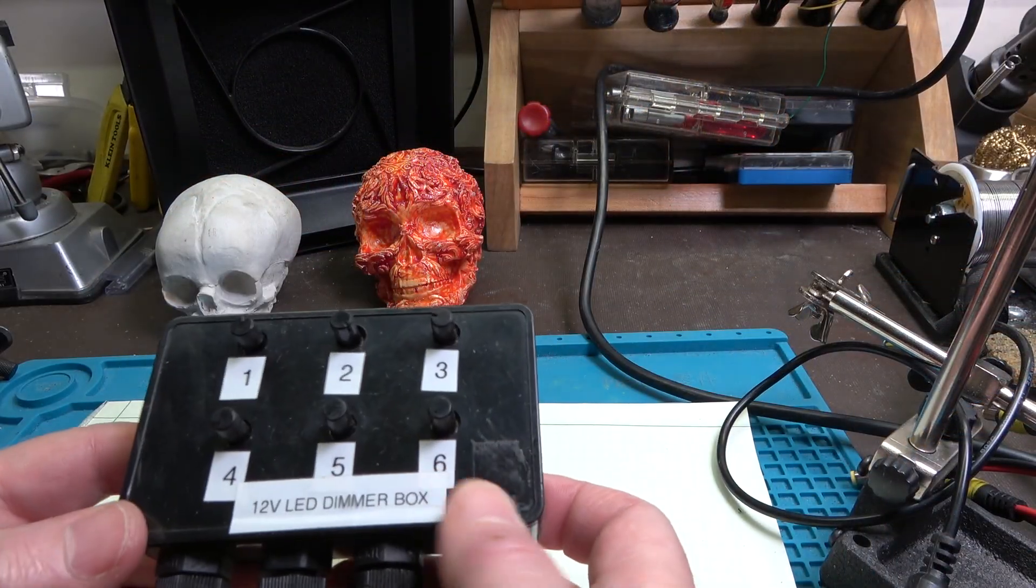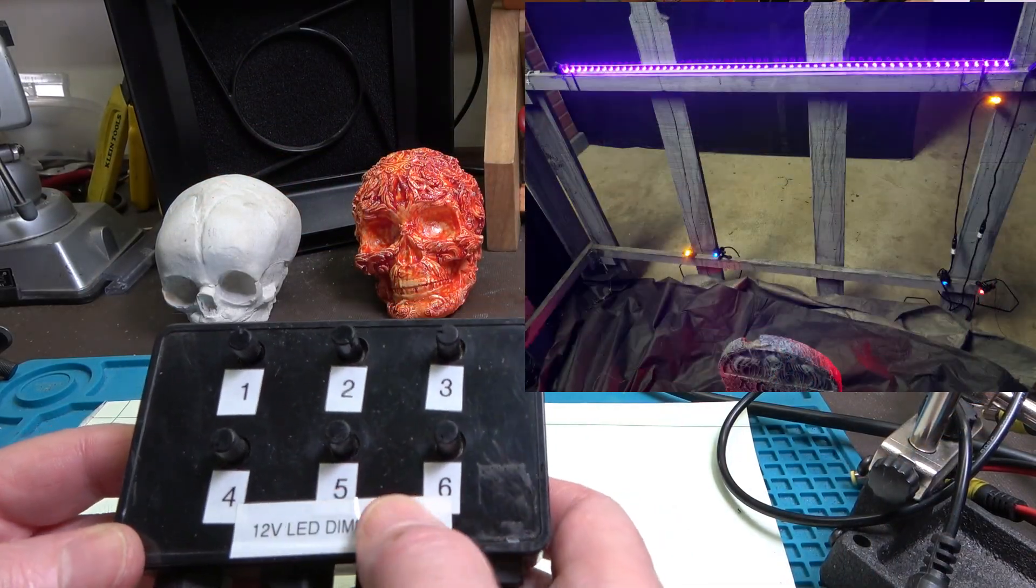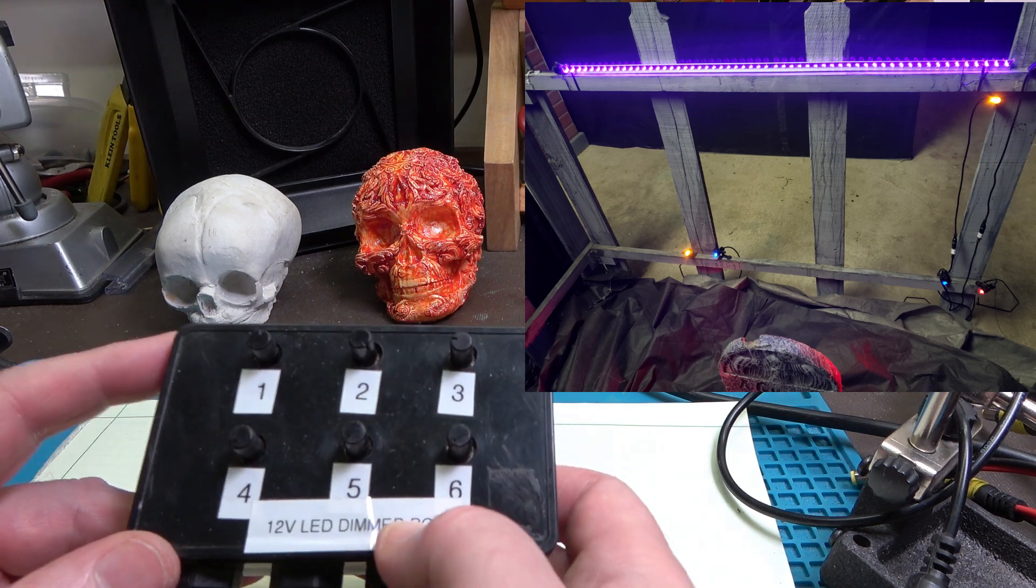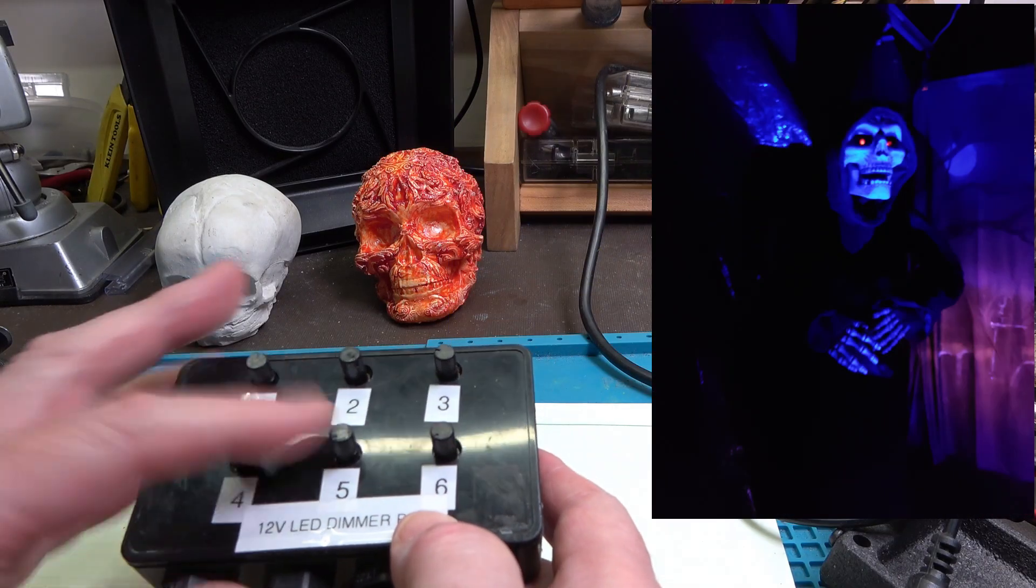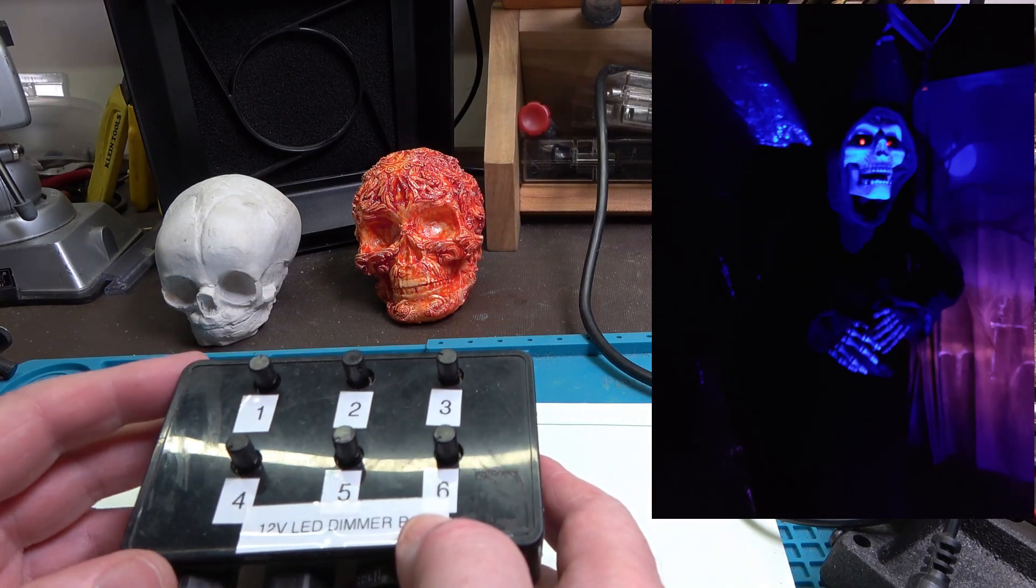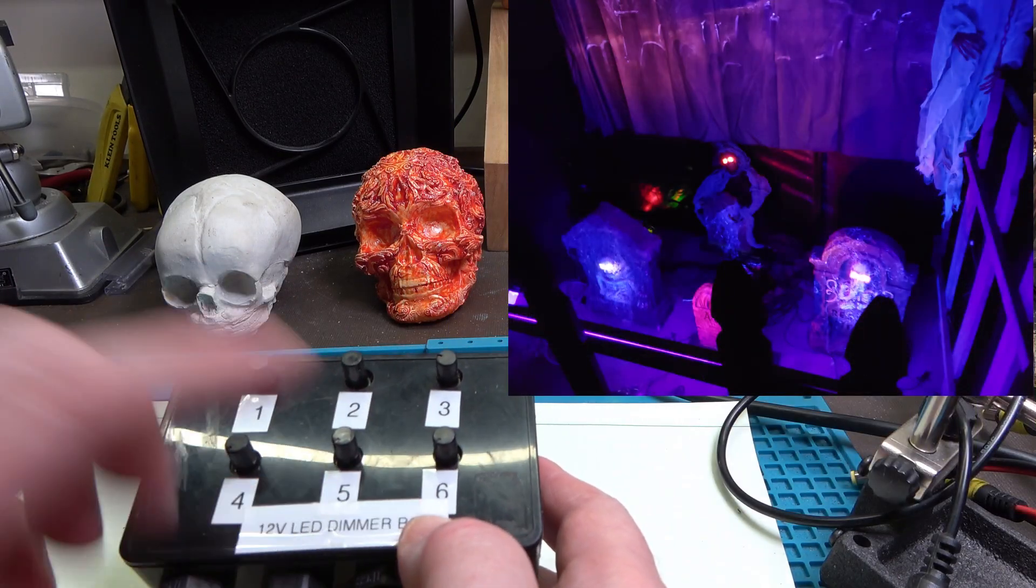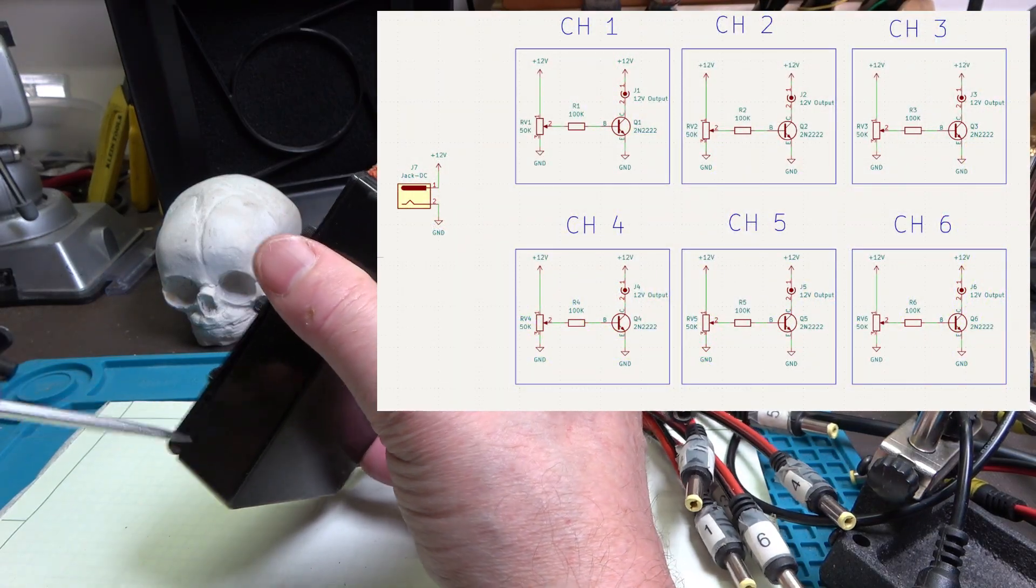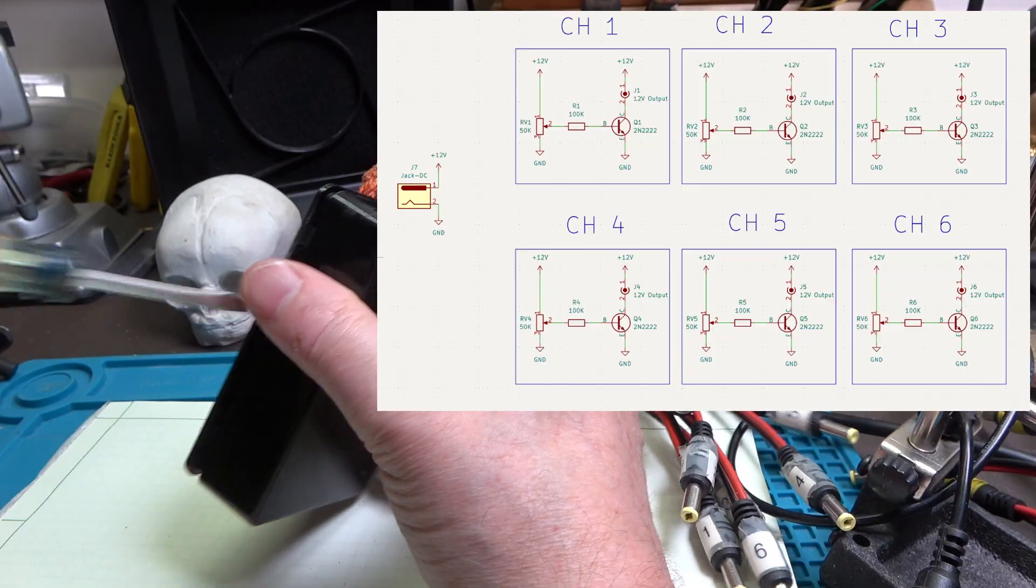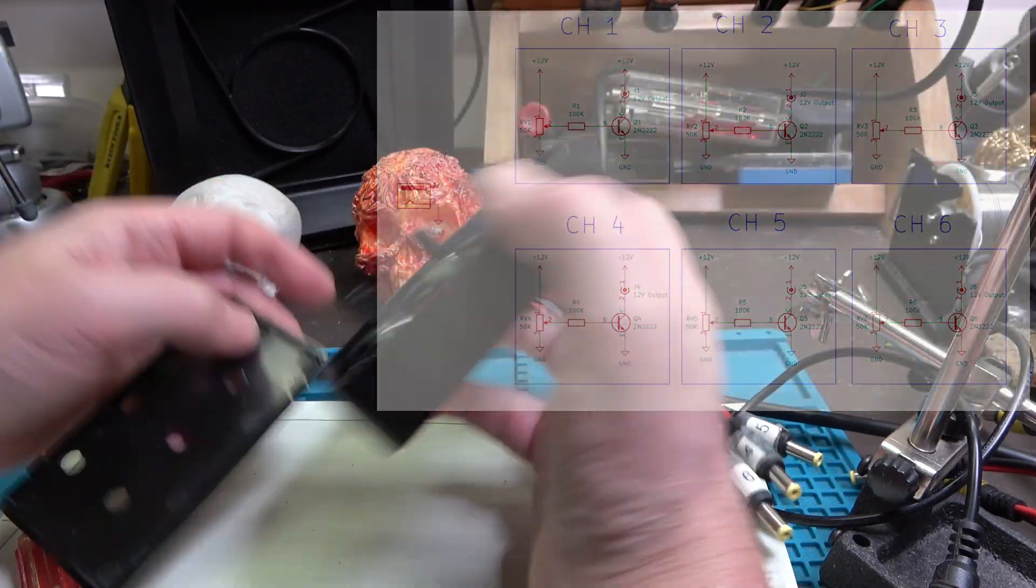Here, I have breadboarded the circuit and I will connect some LED spotlights to it and demonstrate it working. Here is my DIY six-channel dimmer box that I've used in the past to set up a graveyard scene. In this scene, I had various spotlights pointing at tombstones and my Grim Reaper prop. The dimmer box was an easy way to adjust the mood lighting in that scene. Here's the schematic for the dimmer box. It's basically the same circuit repeated six times, once for each channel.